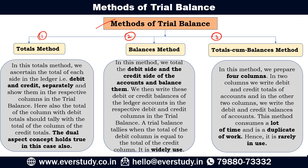In the total method, basically what you have to do is take all the ledger accounts and ascertain the total of the debit and credit balances of each ledger account. We have to show those totals in the trial balance. This follows the dual concept, which is an accounting concept.